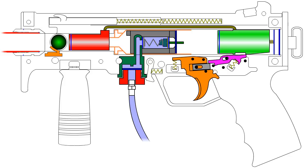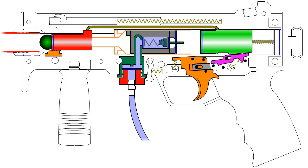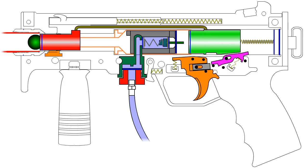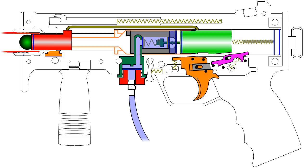The user pulls the trigger on the marker, which allows the hammer, linkage arm, and front bolt assembly to move forward. A ball is loaded into the barrel and the hammer hits the valve pin, releasing air into the marker. It travels in two separate directions.